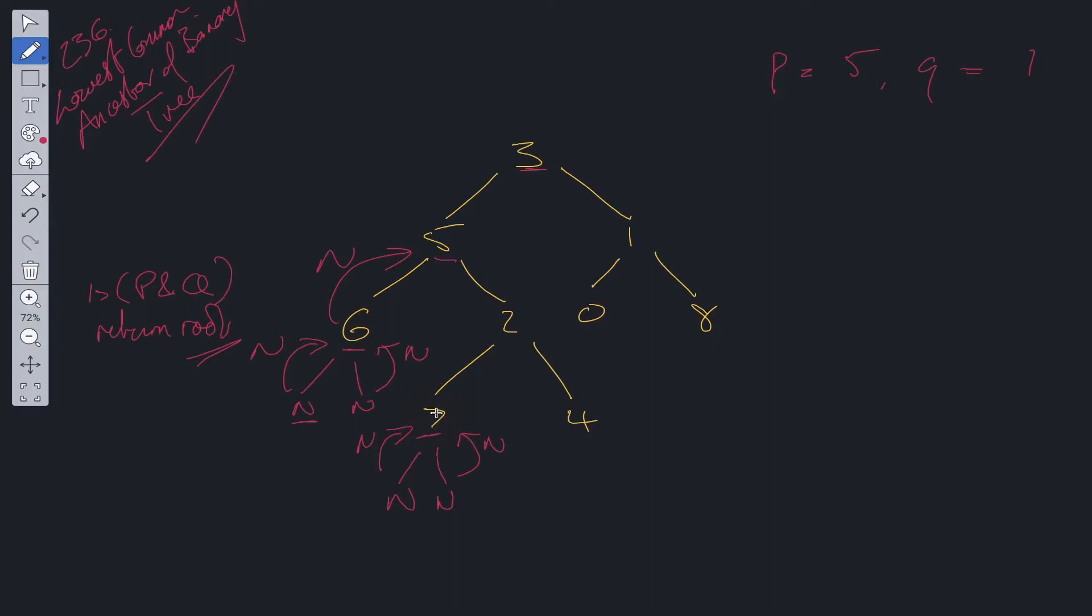Is 7 equal to 5 or 1? No. So we return null to 2 from the left side. Then we recurse down the right side. We get to 4. Again, pointing to null, so we return null from both sides.